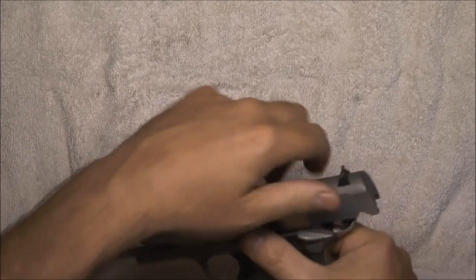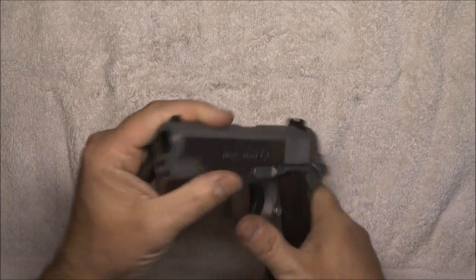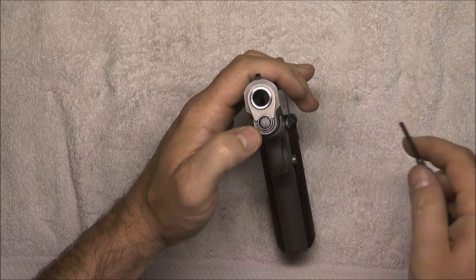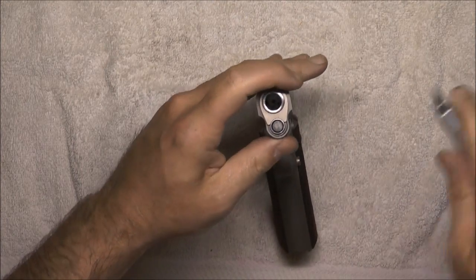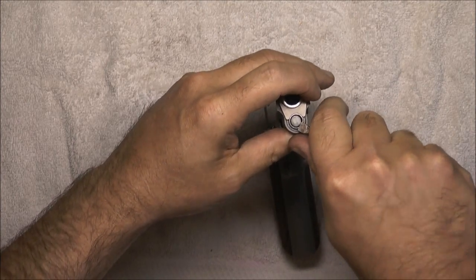So we'll start with a field strip real quick. This thing's got a full length guide rod, so ideally I should have a bushing wrench for this. I do not have a bushing wrench with me, so I'm just going to have to make do.